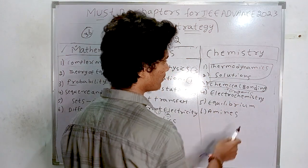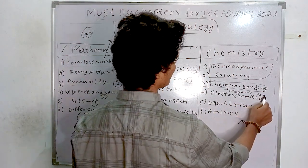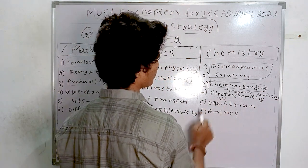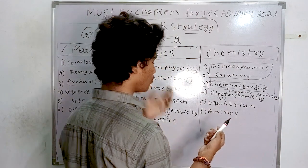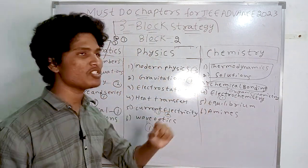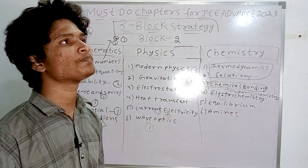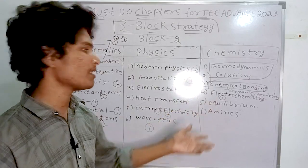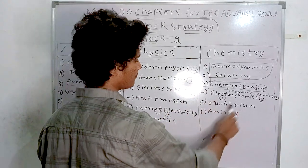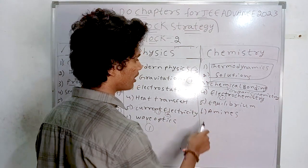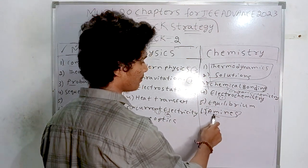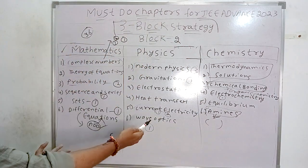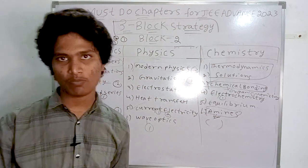Block two chemistry: thermodynamics and solutions are really important. Chemical bonding is the easiest chapter but is the base for all of organic chemistry. Electrochemistry — one question, expect from the Nernst equation and equilibrium (KSP). Also: chemical equilibrium, ionic equilibrium, and amines — basicity and acidity of amines — one question received.